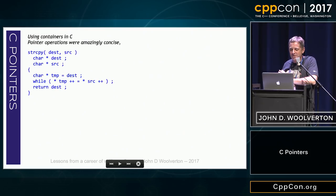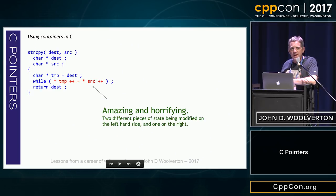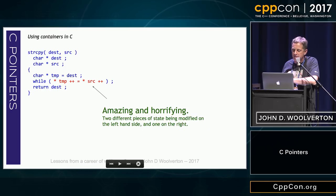Pointer operations were awesome. If you look at the original source for Unix, they were amazingly concise. But they were amazing and horrifying. This little equation right here has two different pieces of state being modified on the left and one on the right. You had to really pay attention to what was going on.